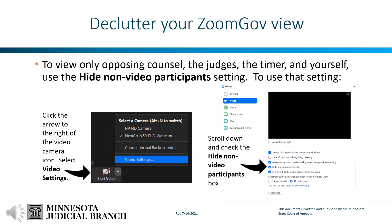To keep your screen less cluttered and show only yourself, opposing counsel, the marshal, and the three judges, you will want to hide non-video participants. To do that, click the little up arrow to the right of the video camera icon at the bottom of your screen. You will be given some options — click Video Settings. Video will be highlighted in the settings window. Scroll to the second grouping where you will see an option that states 'Hide Non-Video Participants' and check that box, then close the settings window. Everyone who does not have their video on will now be hidden. You are now ready for oral arguments and the hearing will begin.